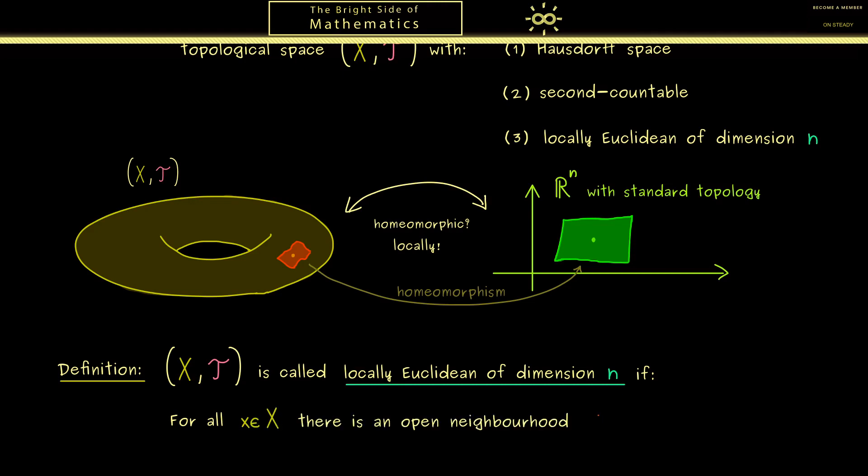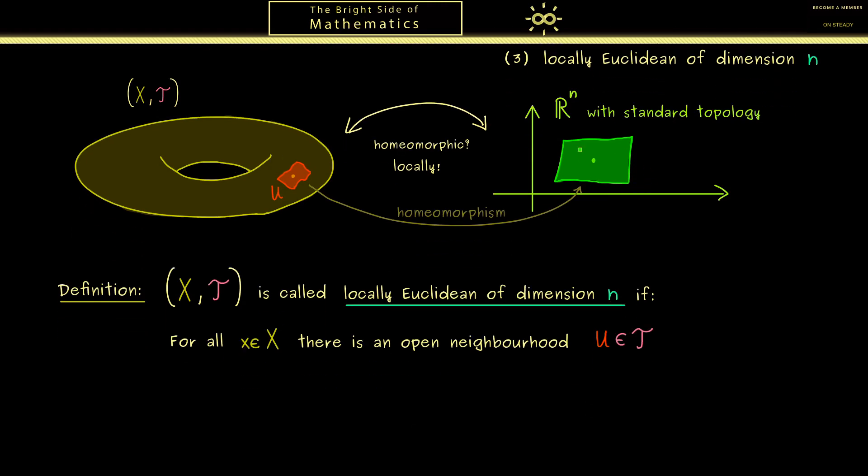So you know by definition this is an open set that contains the point x. And maybe a good name for this set would be U. And moreover, we also find an open set on the right-hand side in R^n.